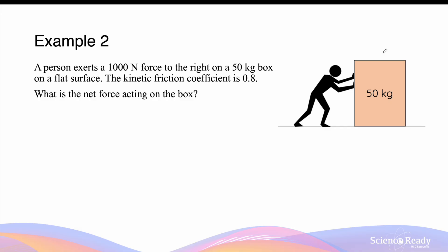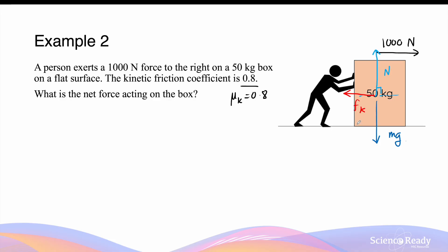A person exerts a 1000N force towards the right — this is the applied force on the box. On the flat surface, the kinetic friction coefficient between the surface and the box is 0.8, so this is the mu k value. Since the box is in a gravitational field, it will experience the weight force going down, equal to mg. The mass is 50 kg multiplied by gravitational acceleration. Since the box is in contact with the flat surface while moving, it also experiences a normal force N acting upwards perpendicular to the surface. Because there's relative motion between the box and the surface, there's also a kinetic frictional force acting towards the left, opposite to the direction of the applied force.